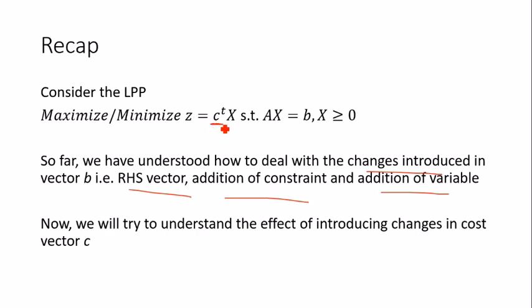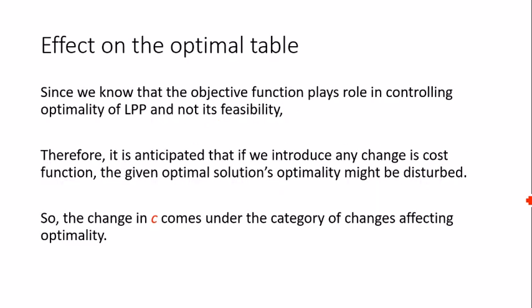The c vector is the cost vector — the cost coefficients of the decision variables occurring only in the objective function. Since the cost vector occurs in the objective function, which controls optimality, it does not play any role in controlling feasibility. Therefore, a change in the cost vector will affect optimality only, not feasibility.